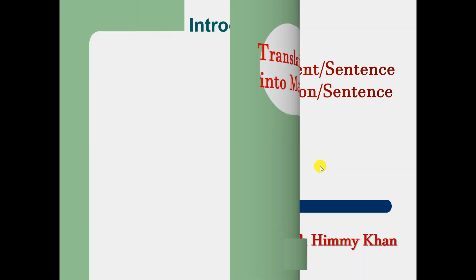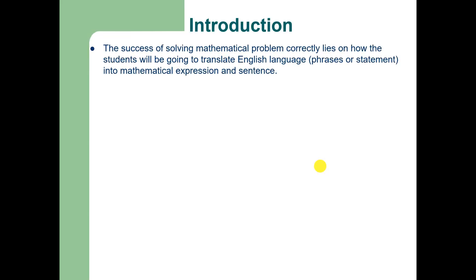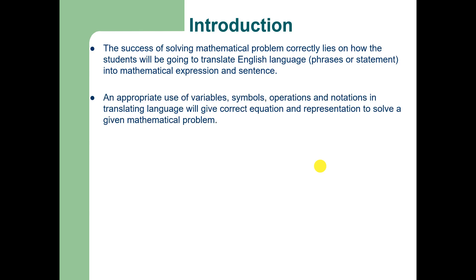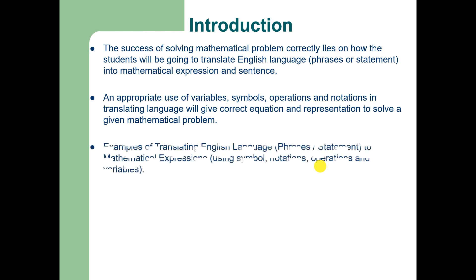Let me start with the translation of mathematical phrases and English phrases into mathematical statements. To solve mathematical problems correctly, we must be able to translate English language — that is, phrases or statements — into mathematical expressions or mathematical sentences. If we use appropriate variables, symbols, operations, and notation in translating English language, it will give us the correct equation and representation to solve a given mathematical problem. So we must understand how to put it correctly mathematically. There are certain examples of translating English language to mathematical expressions and we will do that one by one.